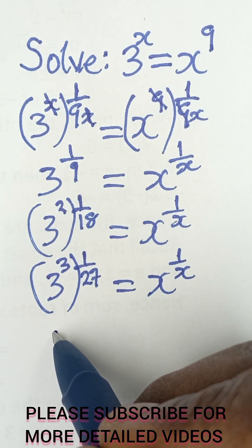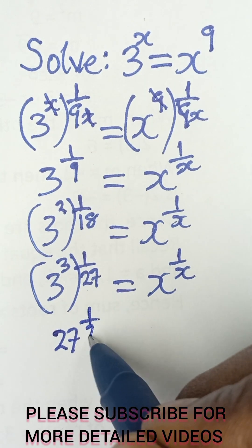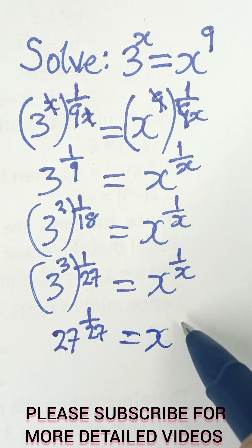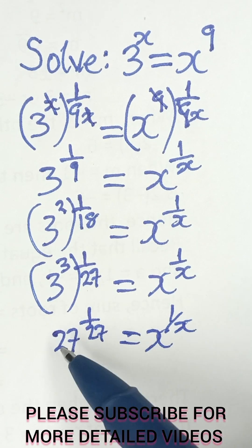So we can say 27 now raised to the power 1 over 27, because 3 raised to the power 3 is 27. And that is equal to x raised to the power 1 over x. Now if we check, we can compare now.